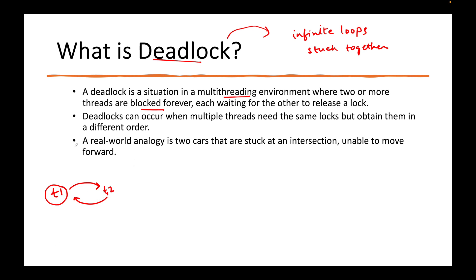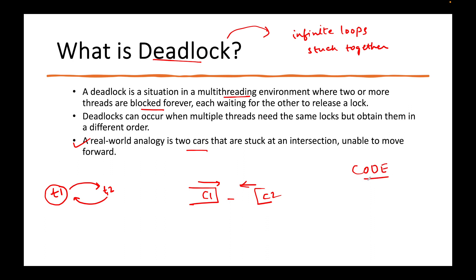A good analogy is two cars stuck at an intersection. Both of them want to move forward but there is no sideways. So there's C1 and C2. If C1 wants to move forward, C2 has to move. But C2 says: 'If I have to move, I cannot go back — I have to go forward.' So both are stuck in a deadlock. We are going to see via code how we can implement this kind of situation.